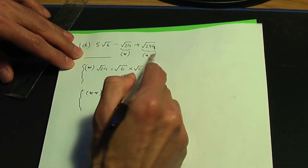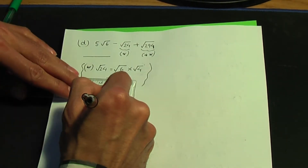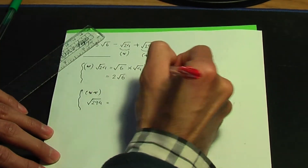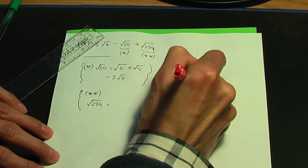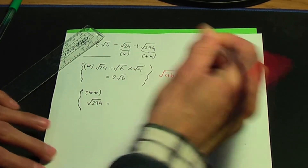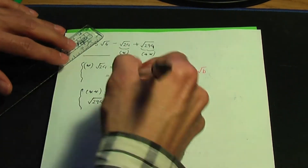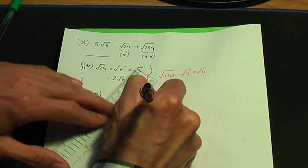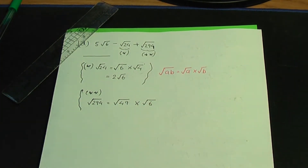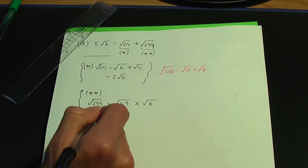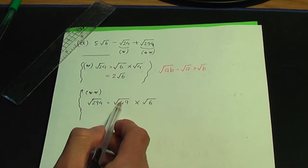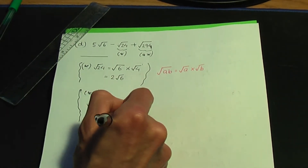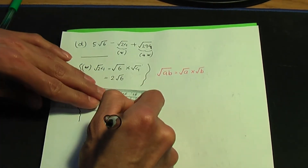For double star, root 294: using the same rule, root 294 equals root 49 times root 6, since 49 times 6 gives 294, and root of 49 gives a whole number of 7. So root 294 equals 7 root 6.